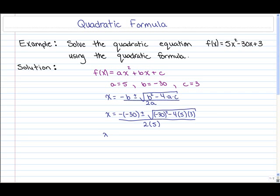So let's start reducing this. Negative times a negative gives positive, so we have positive 30 plus or minus the square root of negative 30 squared. Negative 30 squared reduces to 900 minus 4 times 5 which is 20 times 3 which is 60. So 900 minus 60. Now all of this needs to be divided by 2 times 5 which is 10.